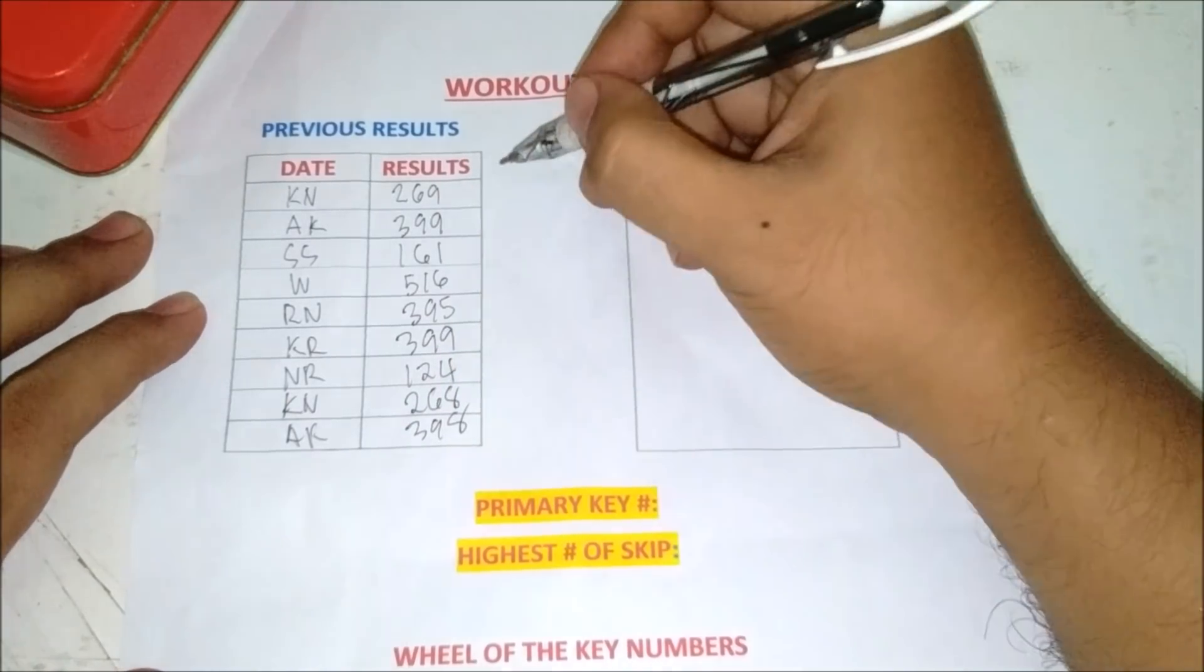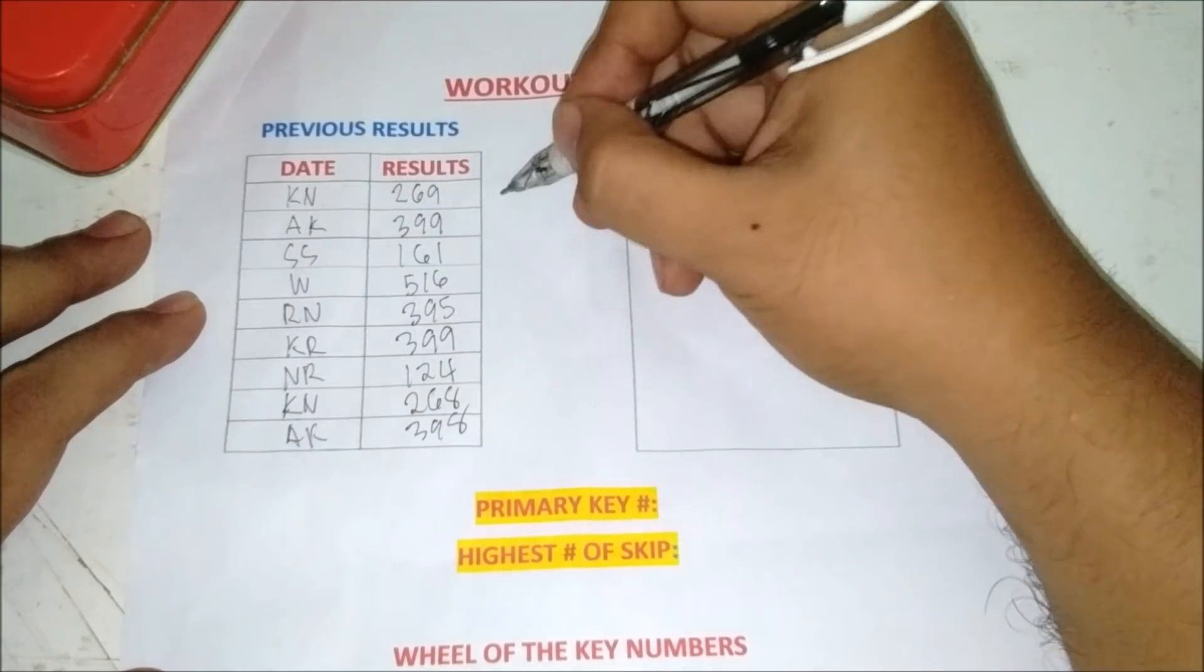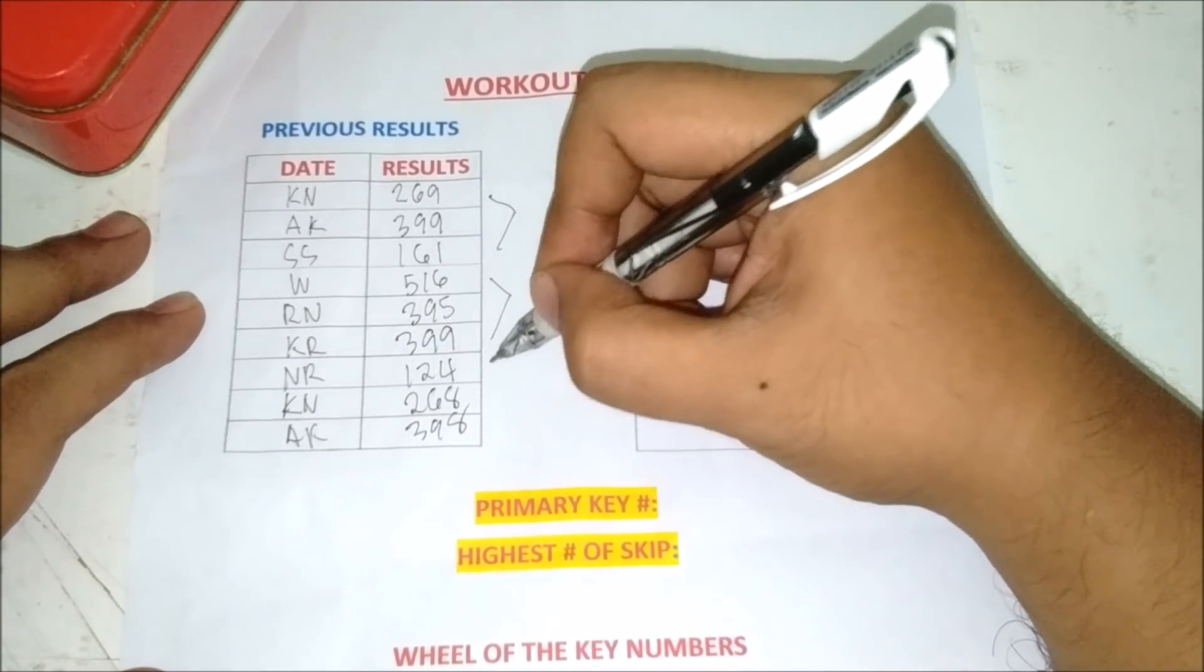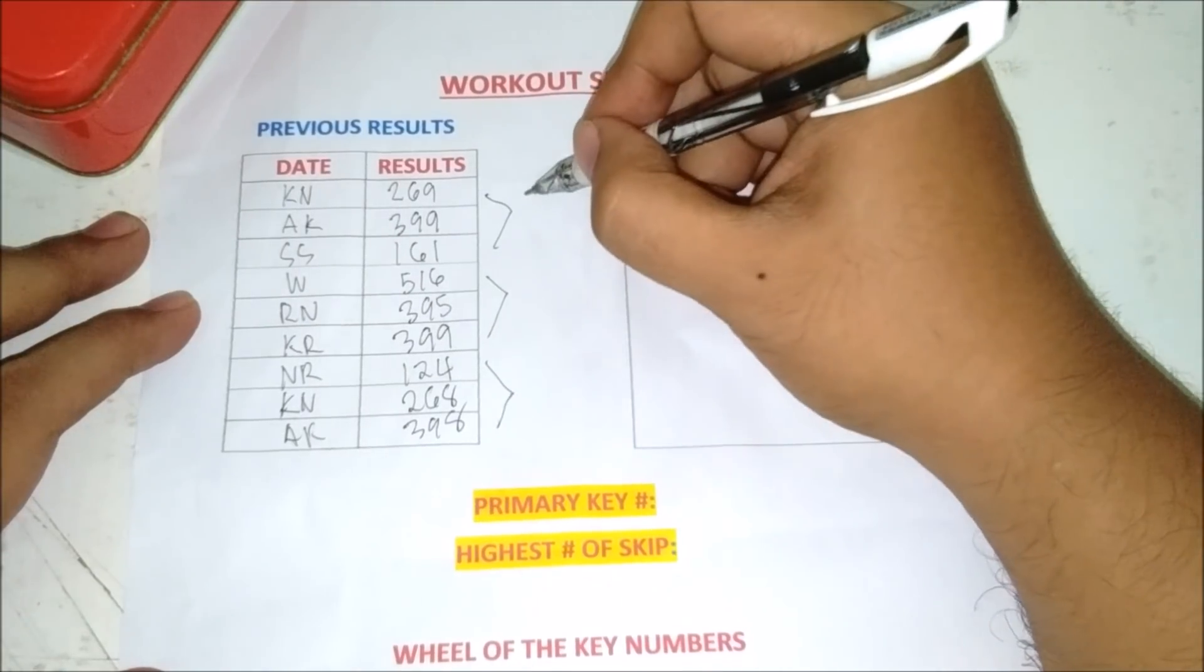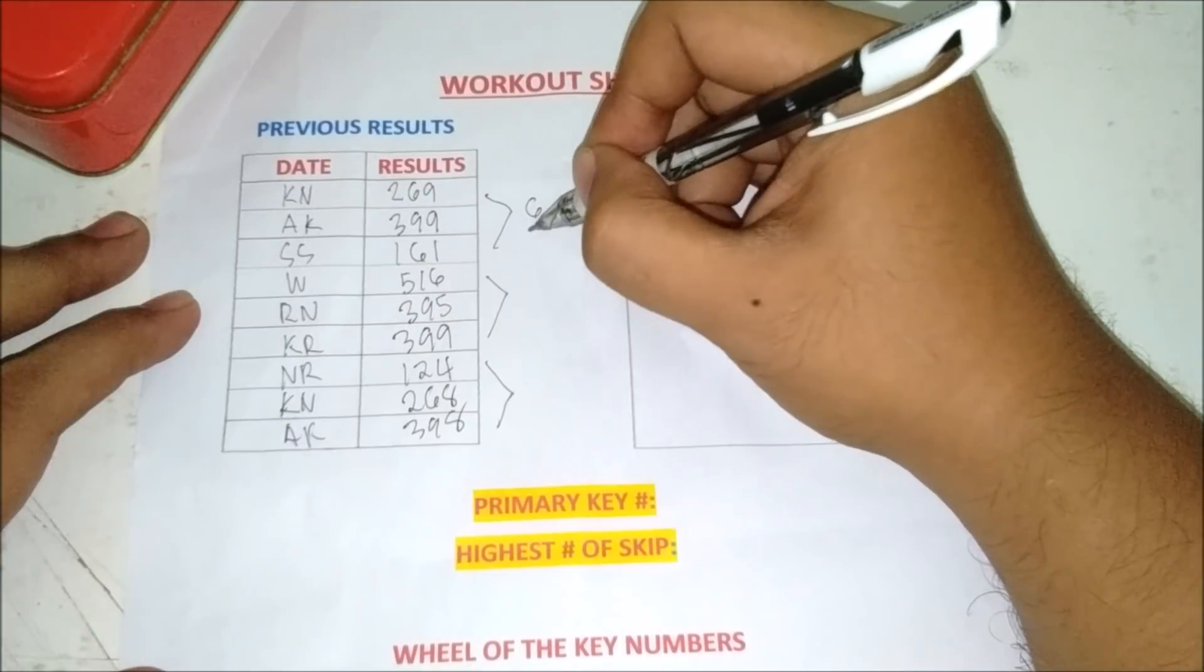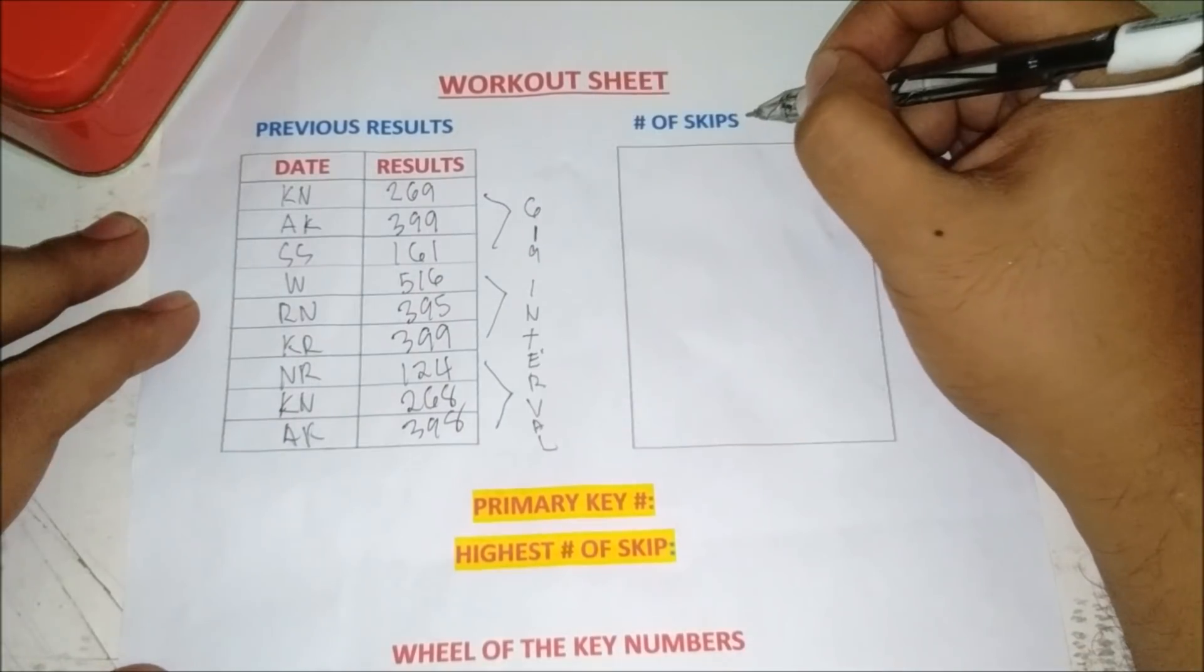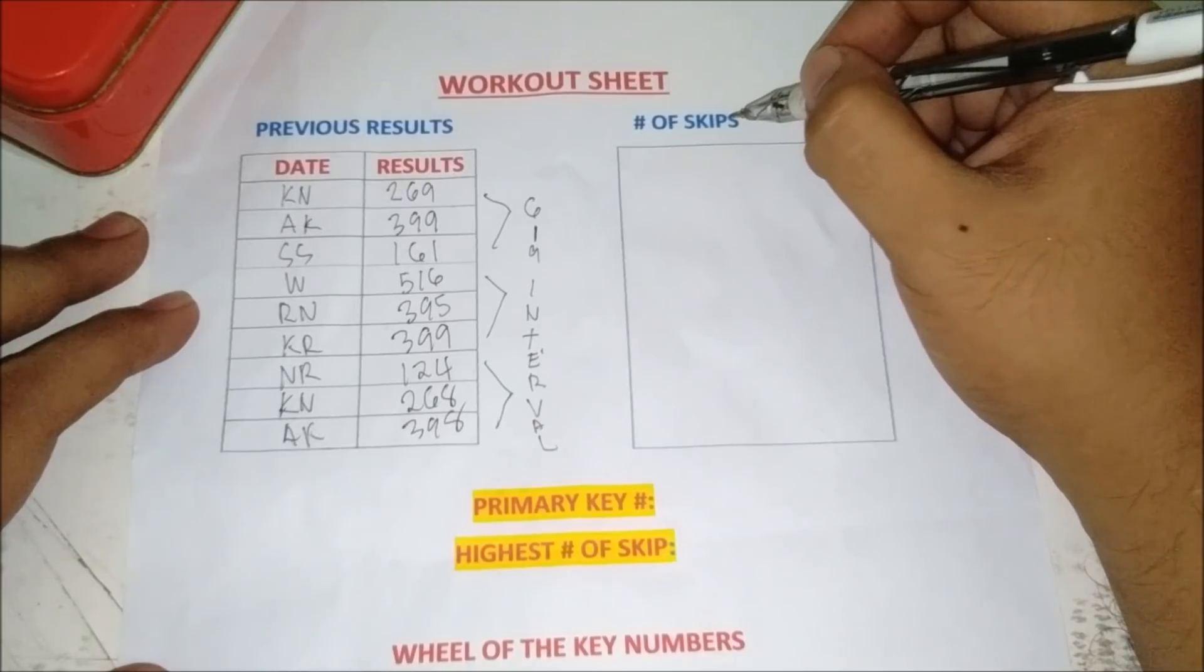These are the previous results for the Kerala lottery. As you can see, this is a three days result or a six to nine draws intervals. Here are the number of skips to get the primary key number.